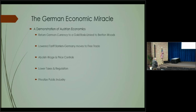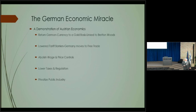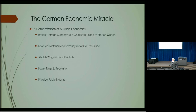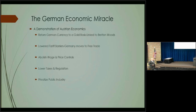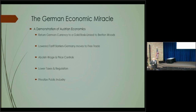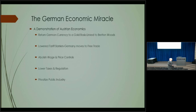Erhard returned the German currency to a gold basis — the Deutsche Mark became so strong that Germans did not like giving it up for the Euro. He lowered tariff barriers, moved Germany to free trade, abolished wage and price controls, lowered taxes, privatized industry, and wrote into the German constitution that Germany could not run deficit spending. One industry he privatized was Volkswagen — originally founded by Adolf Hitler — which has become one of the major manufacturing companies in the world.